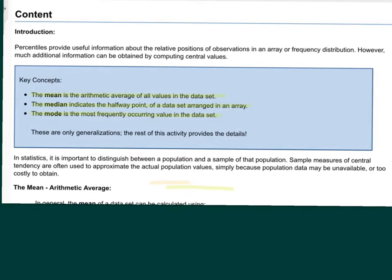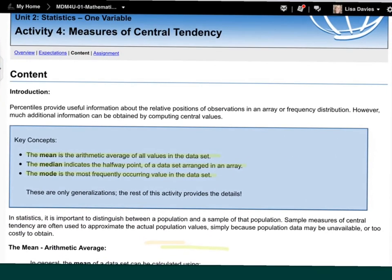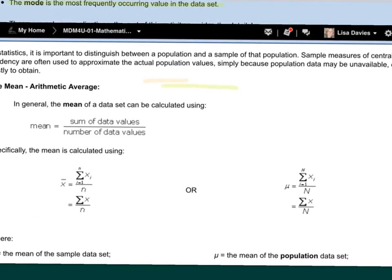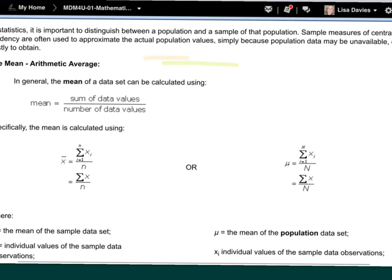We're going to talk first about the mean. The mean is just the arithmetic average. And the way that you get the mean, the easiest way to calculate that, is to sum up all of the data values and then divide by how many there were. So if I gave you a list of 10 numbers, you would add up all those 10 numbers and divide by 10.